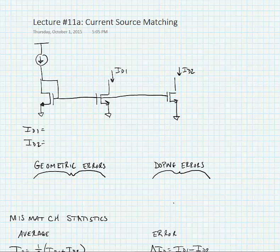Today we're going to begin by looking at current source matching to start looking at the effects of mismatches in transistors, and we'll ultimately use this for mismatches in differential pairs. Here we have a current mirror where we're mirroring two currents, ID1 and ID2, off of a common reference current.